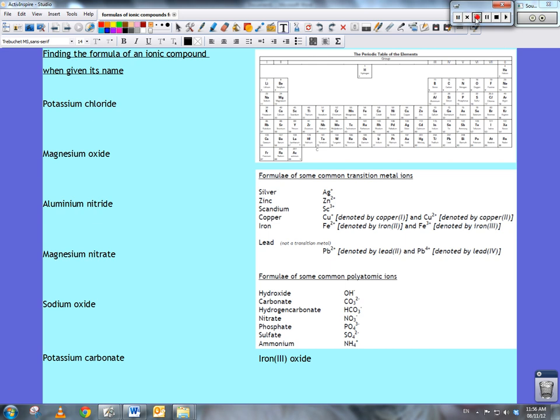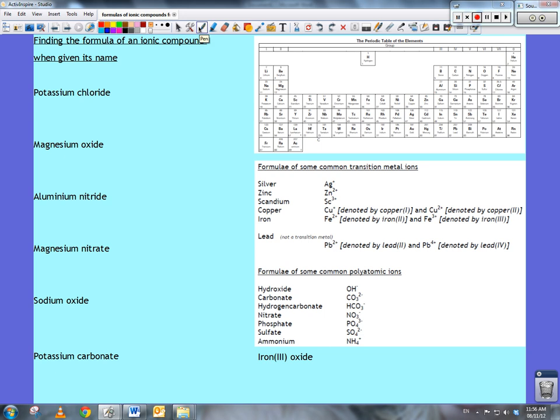Okay, here we go then. So first of all we've got potassium chloride. I know that potassium is in group 1 over here and its symbol is K. I also know that because potassium is in group 1, when it forms ions it loses one electron and becomes a positively charged ion, K+.